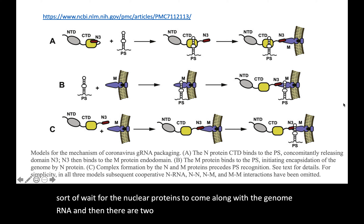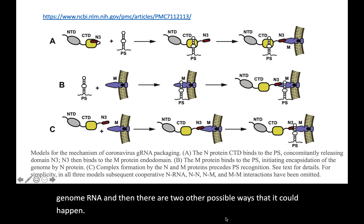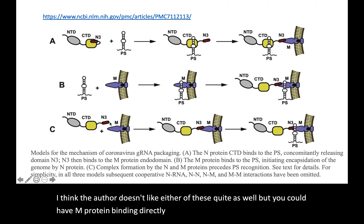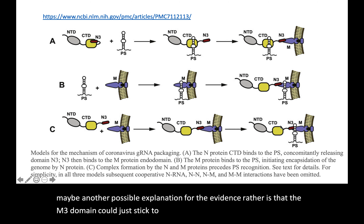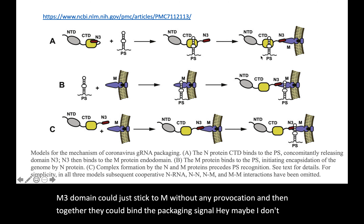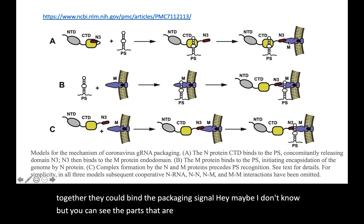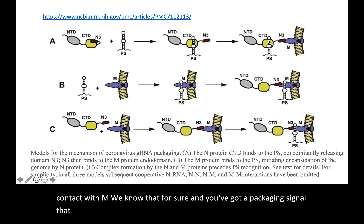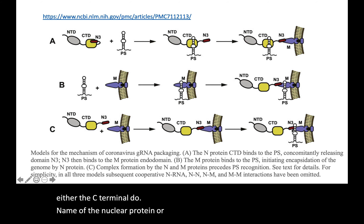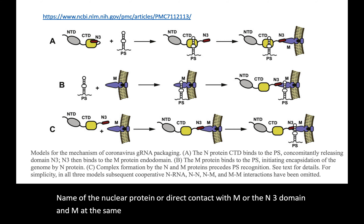There are two other possible models, though the author doesn't favor them as much. One is that M protein binds directly to the packaging signal — there's a little bit of evidence for that. Another possibility is that the N3 domain simply sticks to M without any provocation, and then together they bind the packaging signal. What's consistent across all models is that N3 is always in contact with M, and the packaging signal is in contact with either the C-terminal domain of the nucleoprotein, M directly, or N3 and M simultaneously.